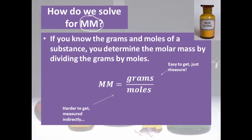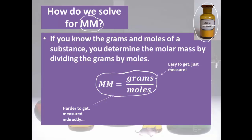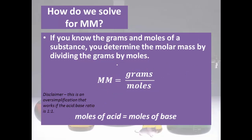So how do we solve for molar mass? First, molar mass is the number of grams in one mole of a substance — grams over moles. If we have some random unknown solid acid, it's easy to measure the grams from a sample. The number of moles is harder to measure directly, so we have to measure it indirectly. If we know the mass and can figure out the moles, dividing grams over moles gives us the molar mass.